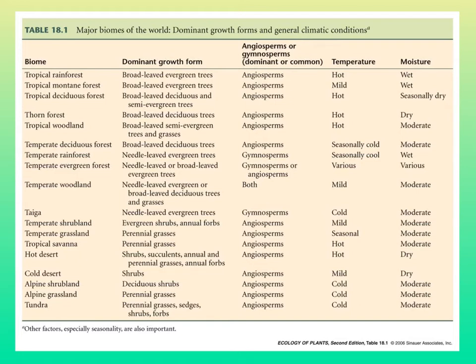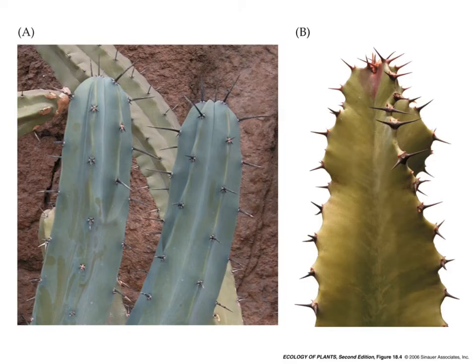Contrast that with the taiga: needle-leaved evergreen trees, mostly gymnosperms, cold temperatures, and moderate amounts of moisture. The same biome in different parts of the world means the climatic conditions are the same, but sometimes different plant families are present — different taxonomically, but convergent in what they look like in growth form.